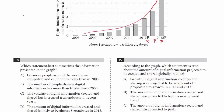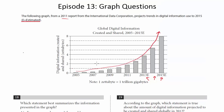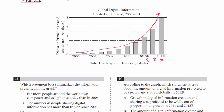So let's see what we've got in the choices. Choice A: far more people around the world own computers and cell phones today than in 2005. Be careful — that might be implied because of the increase in data sharing. But that's not 100% supported. It could be the case that the same amount of people own computers and cell phones and it's just that we're using them more often. So you can't guarantee this increase is caused by more people owning computers and cell phones. We can get rid of A.